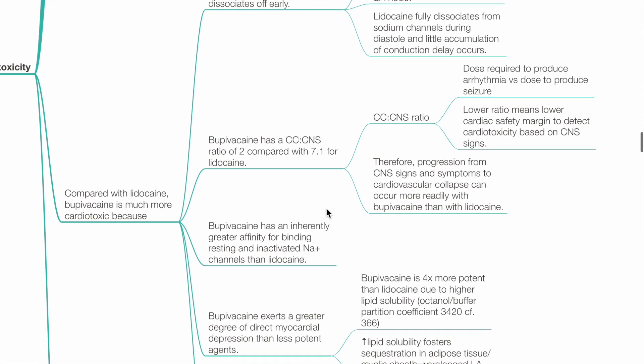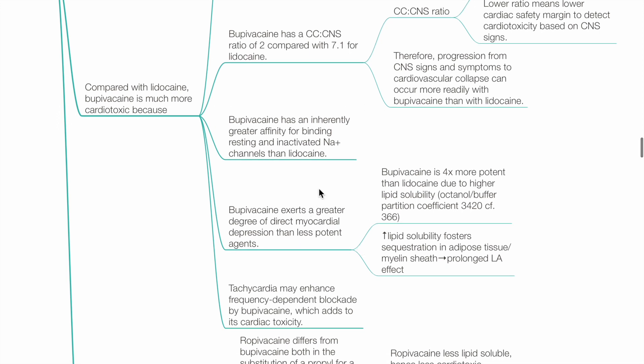Bupivacaine has a CC:CNS ratio of 2, compared with 7.1 for lidocaine. The CC:CNS ratio is the dose required to produce arrhythmia versus the dose to produce seizure. A lower ratio means a lower cardiac safety margin to detect cardiotoxicity based on CNS signs. Bupivacaine has inherently greater affinity for binding to resting and inactivated sodium channels than lidocaine.